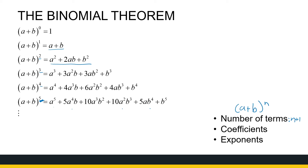The next pattern we're going to look at are the coefficients — the numbers in front of my a's and b's. Starting with to the power 1: 1, 1. To the power 2: 1, 2, 1. To the power 3: 1, 3, 3, 1. To the power 4: 1, 4, 6, 4, 1. To the power 5: 1, 5, 10, 10, 5, 1. There is a beautiful pattern here — I'm going to write it in the form of a triangle, because this is quite a famous triangle called Pascal's Triangle.